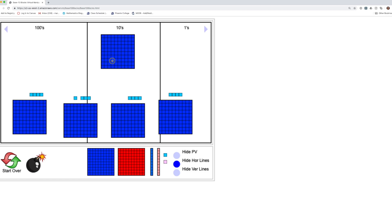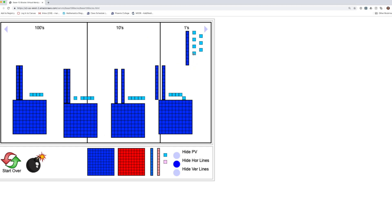So I can first take this 100 and separate it into rods. And I know that I can give 2 rods to each person, but then I still have 2 rods left over that I need to break into ones. So I can go ahead and do that. And then I can see that each person is going to get 5 ones as well. So 2 rods and 5 ones is 25.